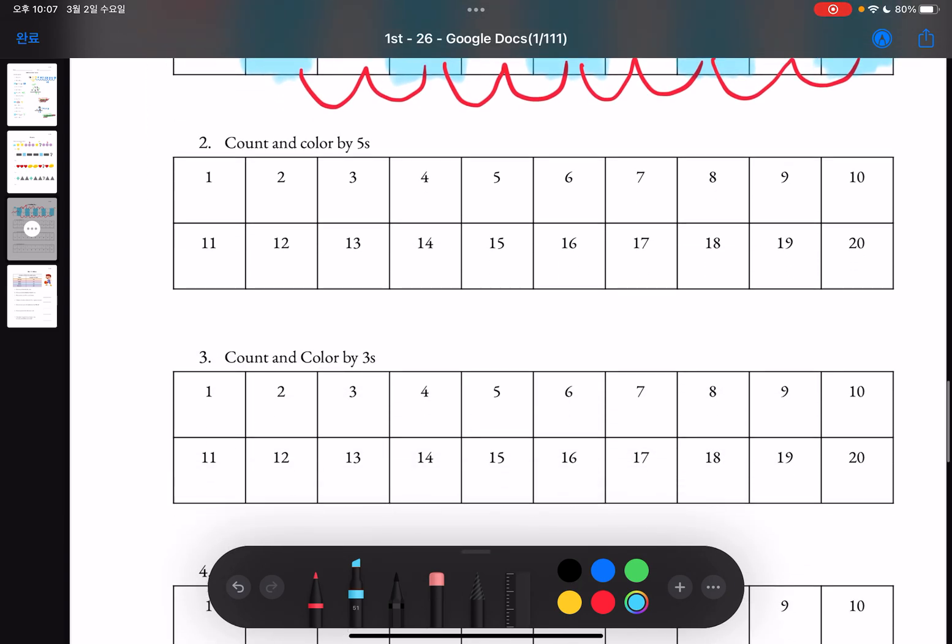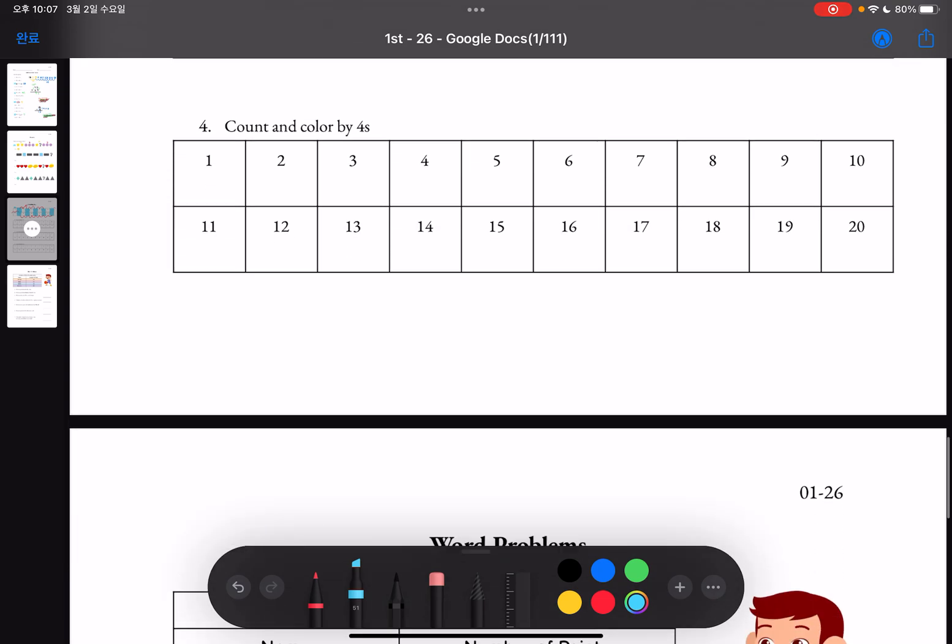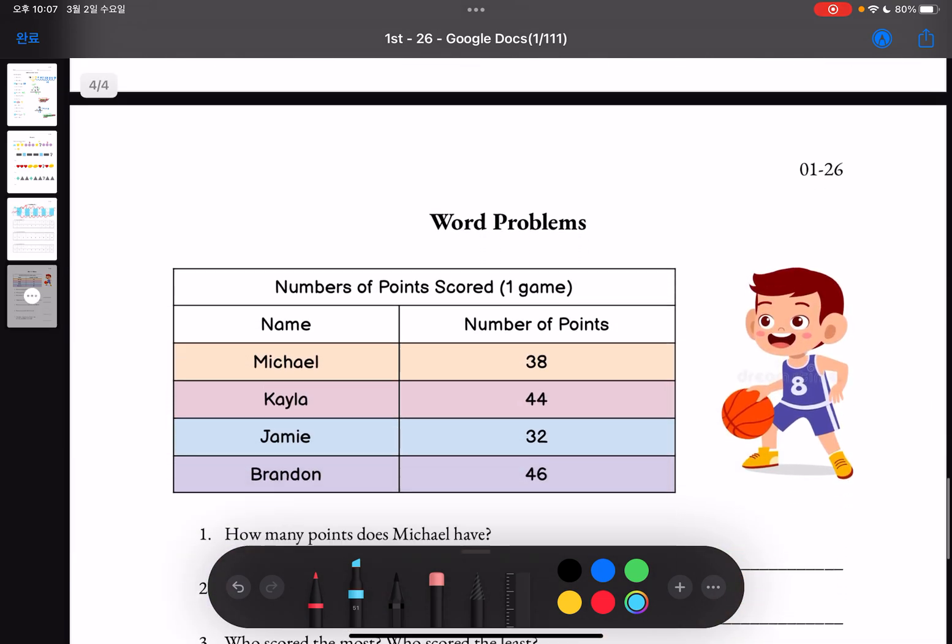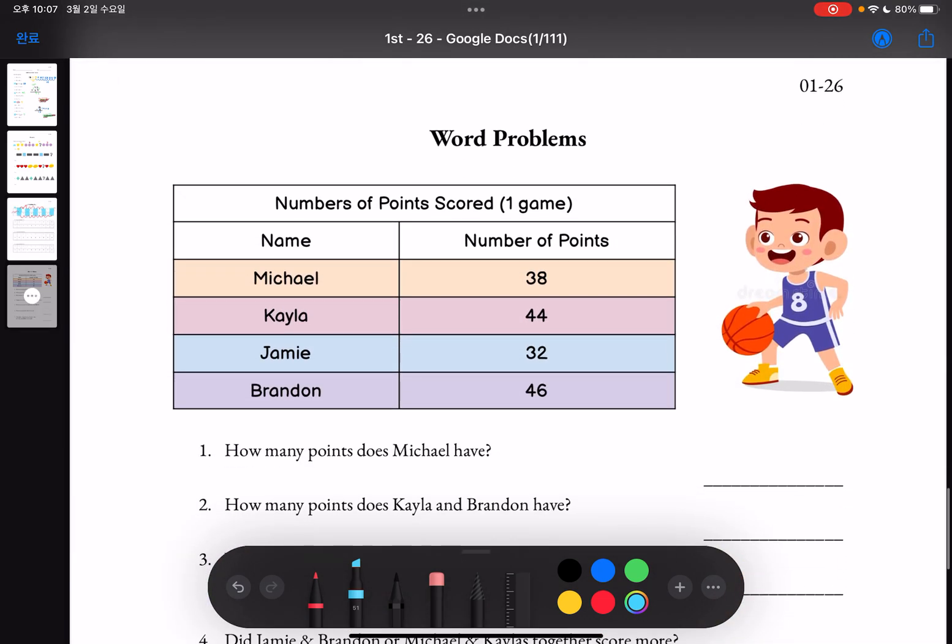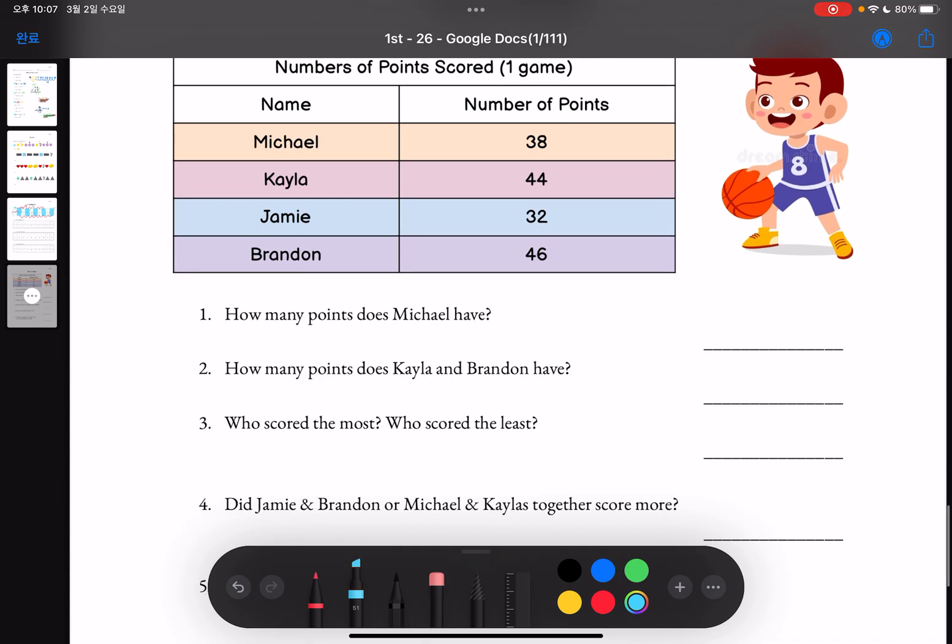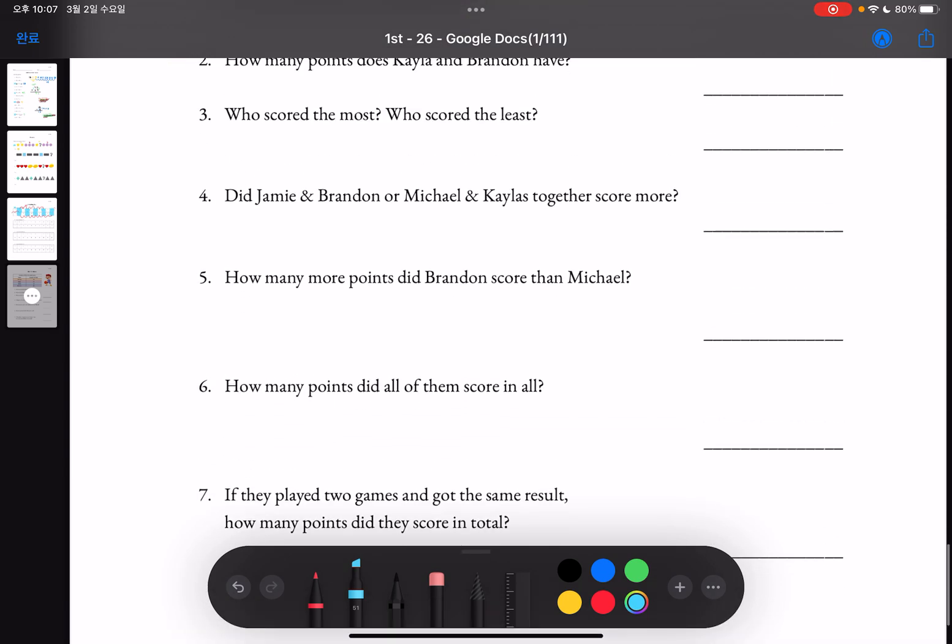And so on until you get to 20, and you'll be coloring in the numbers on the table according to what it says. And that's how you'll be doing number two, three and four. And lastly, moving on to the word problems.